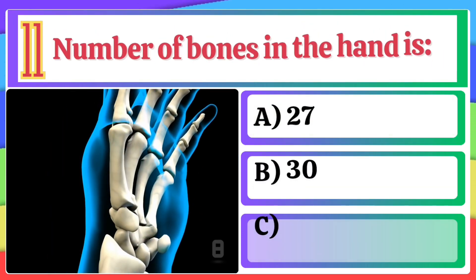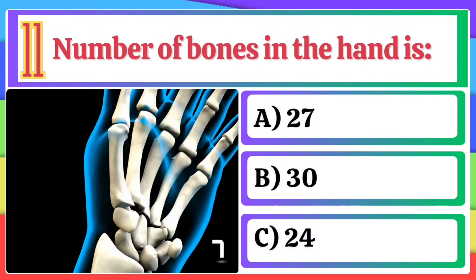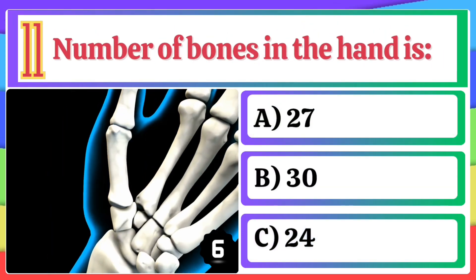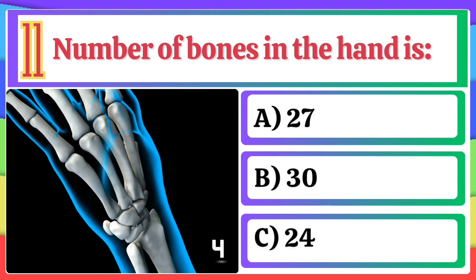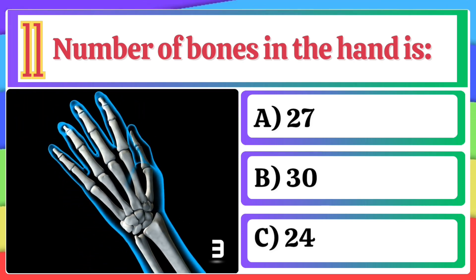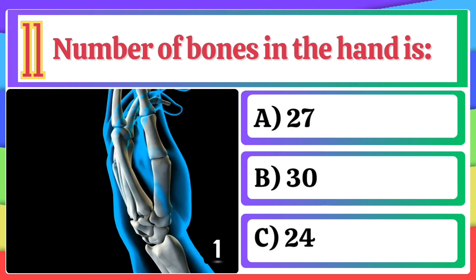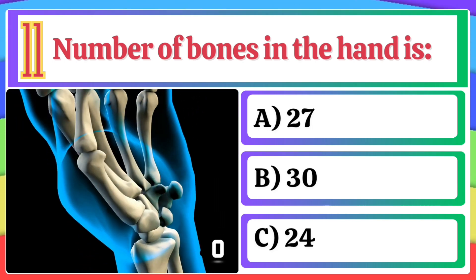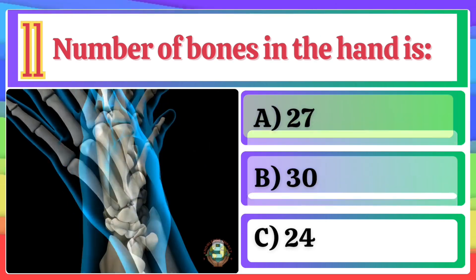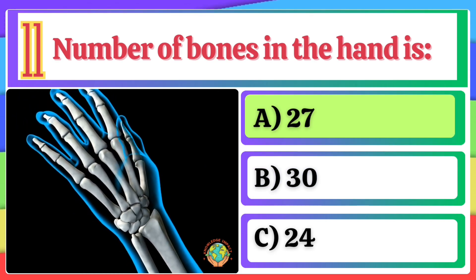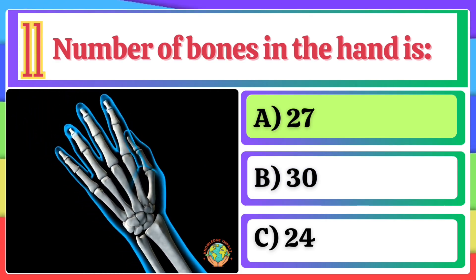Number of bones in the hand is: A) 27, B) 30, C) 24. The correct option is A, 27.